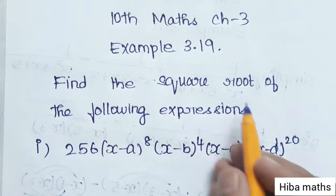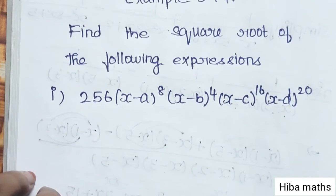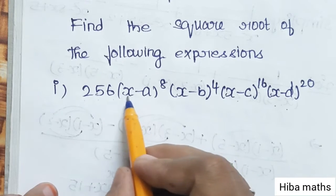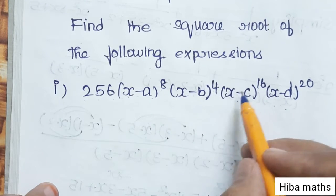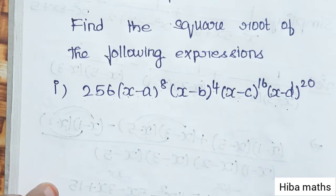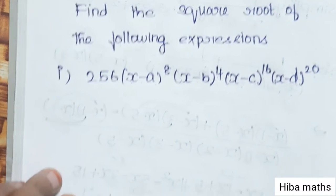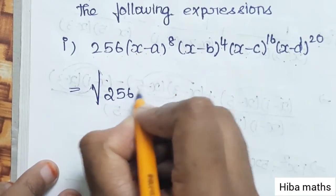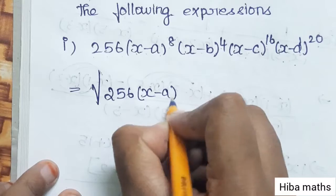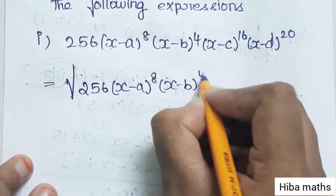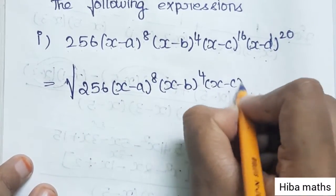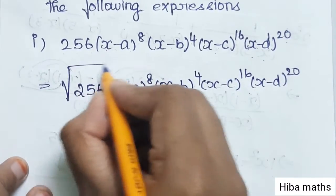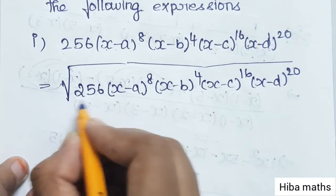Example 3.19: Find the square root of the following expressions. The first question is 256 · x^a power 8 · x^b power 4 · x^c power 16 · x^d power 20. So now we take the square root of the full expression.